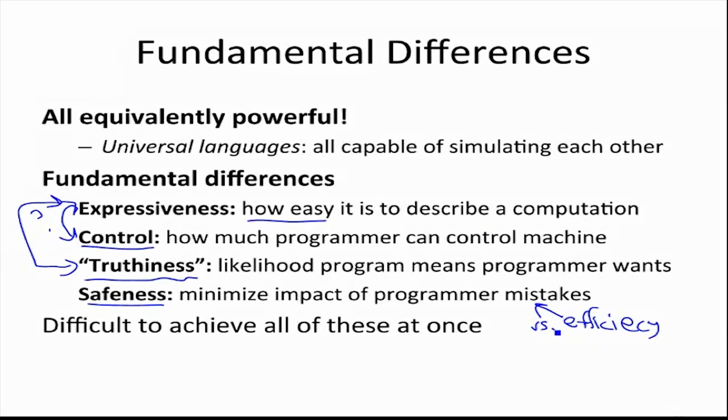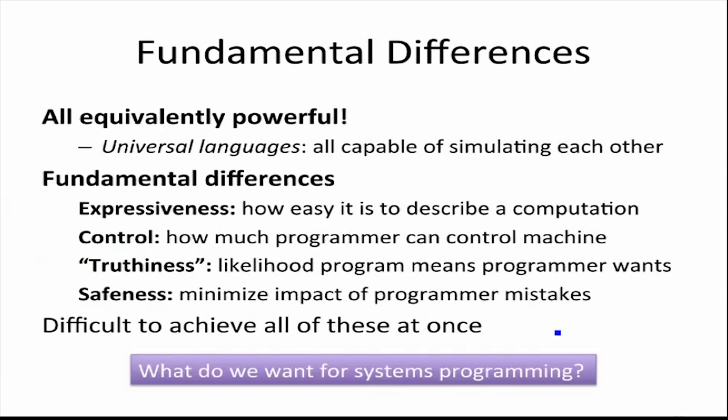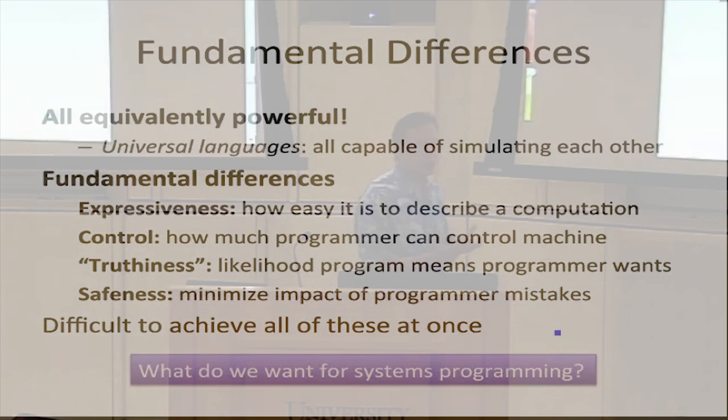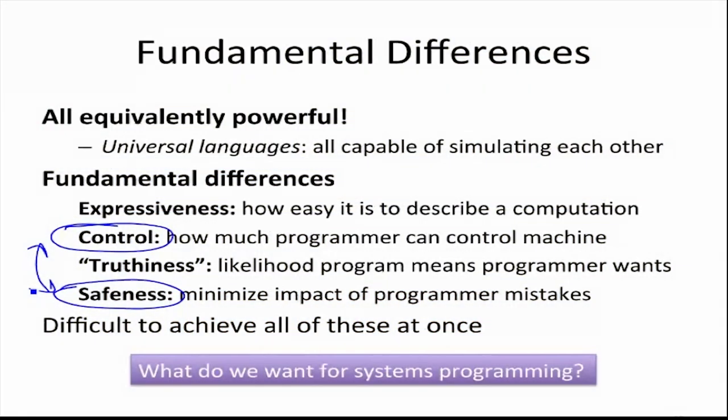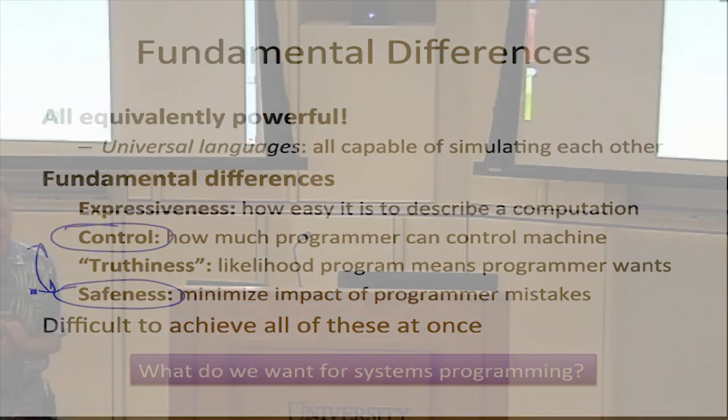It's difficult to achieve all of these at once. If our goal is to build operating systems or do lower-level systems programming where we care about performance, which of these should we emphasize? Control — certainly if we're writing an operating system kernel we need to look at a particular location in memory and be able to put something there. We also certainly want safety. These two seem to be pretty much in conflict: if you can do arbitrary things with arbitrary locations in memory, that sounds pretty dangerous — your program could have a bug that an attacker could exploit.